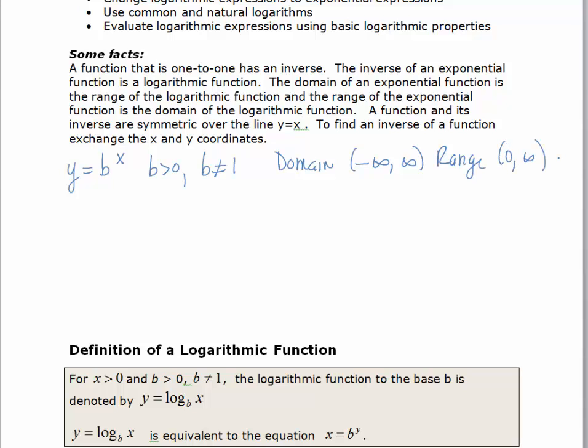And so the inverse of an exponential function is x equals b to the y. To generate an inverse, you would just exchange the x's and y's. And so the definition is still the same. b has to be greater than zero, and b cannot equal one.